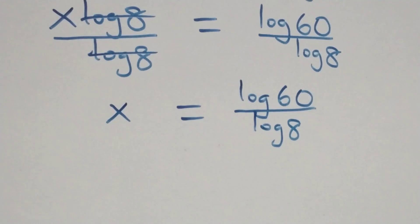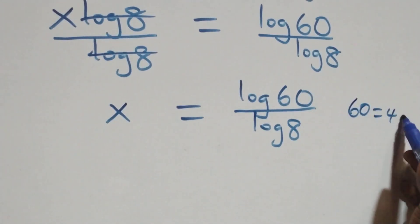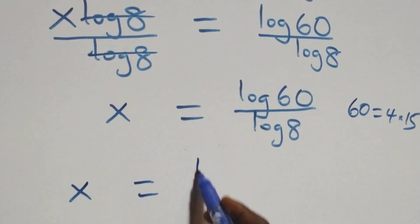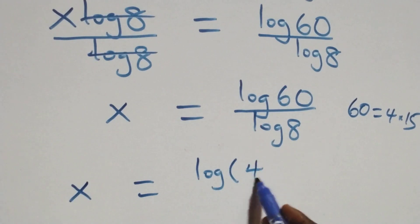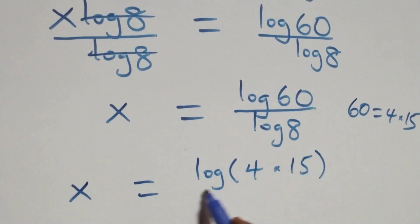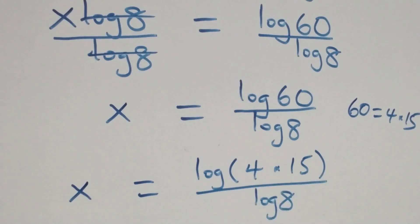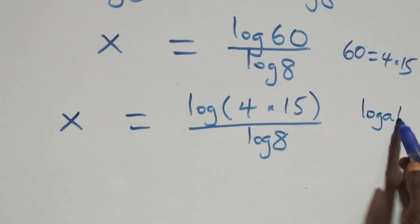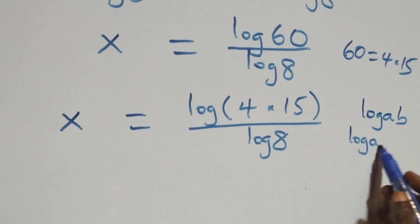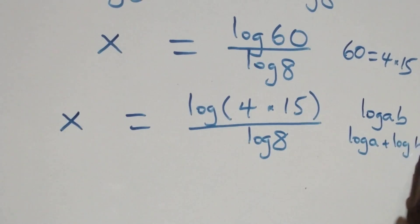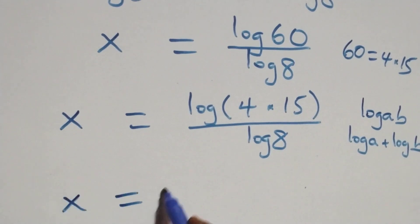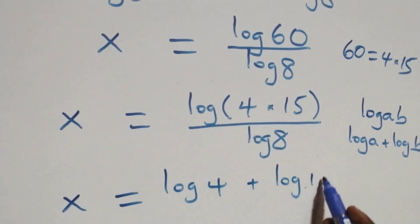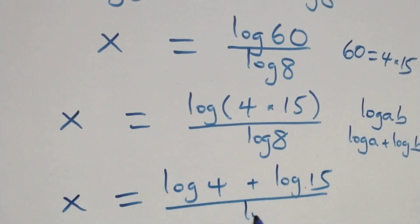Then, next step here, we can write 60 as 4 times 15. So we have x equals to log(4 times 15) over log 8. This follows the law of logarithms: log(a times b) is the same as log a plus log b. So all we have becomes x equals to (log 4 plus log 15) over log 8.